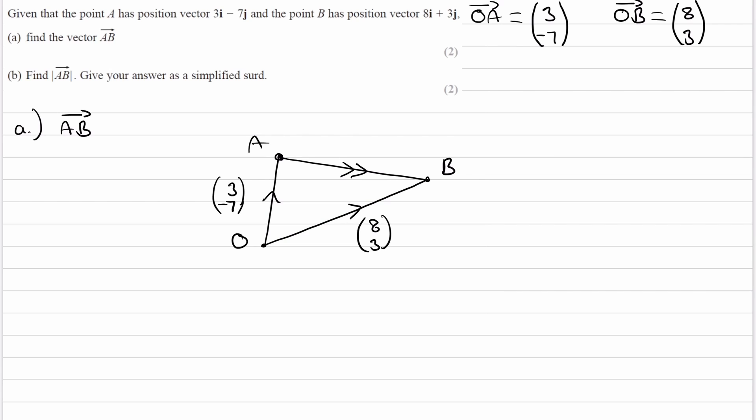So I can rewrite AB as AO plus OB. And notice how when you're doing this method, the letters either side of the plus sign should be the same. So AO is the negative of OA. So this is the same thing then as minus OA plus OB.